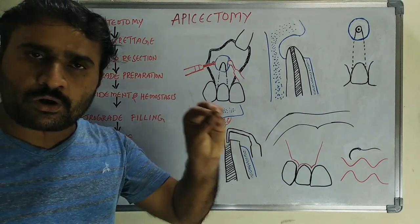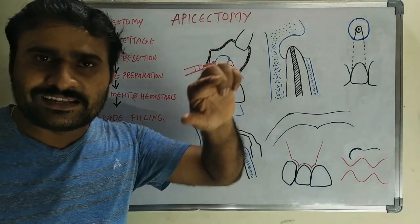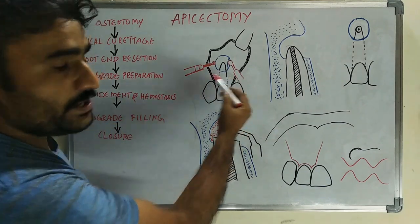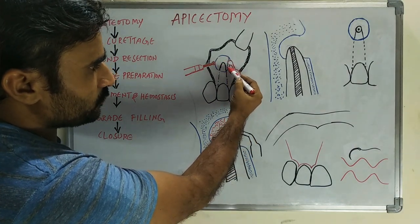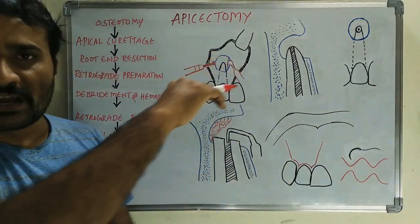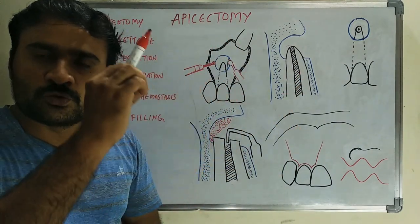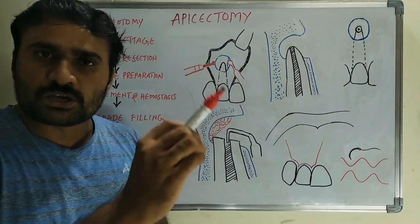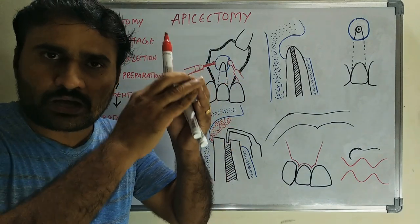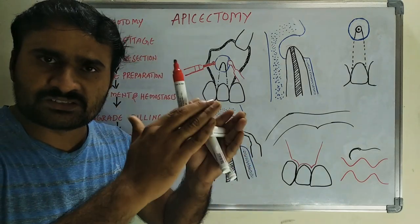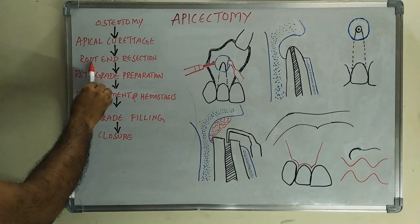After adequate osteotomy, apical curettage is performed. The most important step for success of apicectomy is complete removal of the granulation tissue or any lining in that region. A spoon excavator is used to excavate the granulation tissue. Significant bleeding can be expected because granulation tissue is richly vascularized. After complete removal of granulation tissue, we proceed to root end resection.